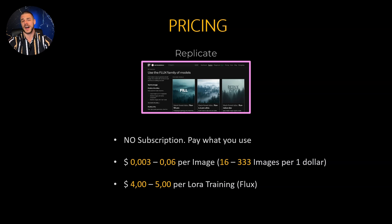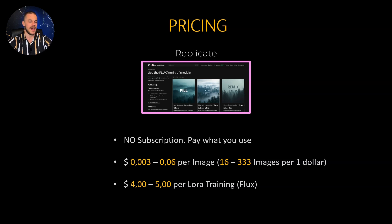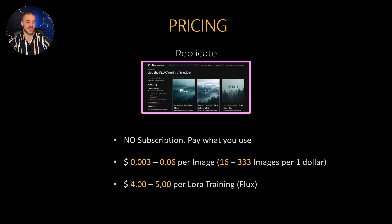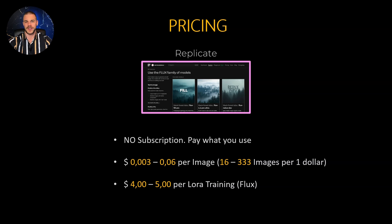The pricing of Replicate is quite different because there is no subscription at all — you only pay for what you use. An image costs between $0.003 to $0.06 if you use the best Flux model, so you get 16 to 333 images for one dollar, which is quite impressive. If you want to train your own LoRA, you pay between four to five dollars, which is also quite affordable.